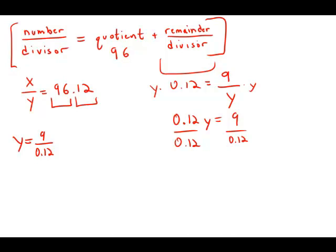We get y equals 9 over 0.12. And I'm going to move the decimal places over, so move the decimal places 2 over in the numerator and the denominator. So we get 900 over 12.